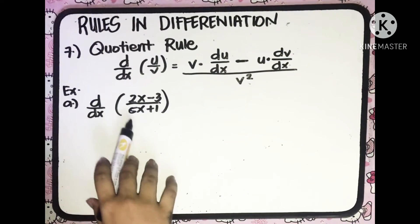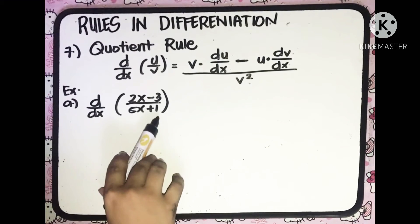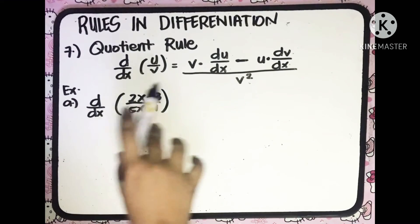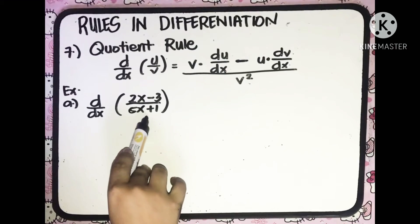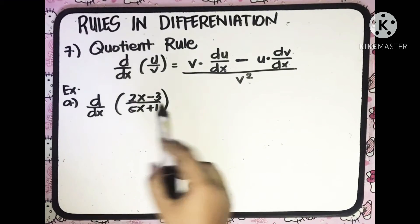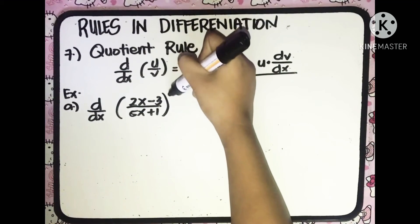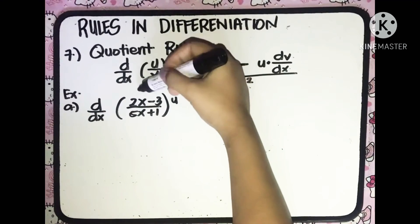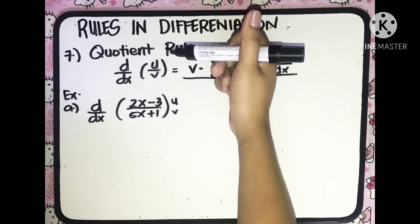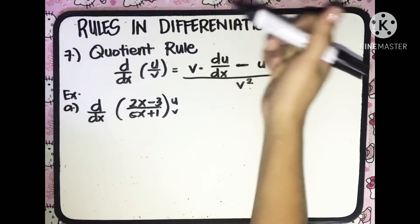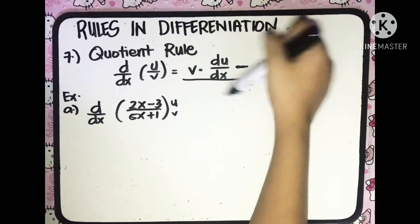Let's label the given example. We have the derivative of (2x minus 3) all over (5x plus 1) with respect to x. So the value of u here is 2x minus 3, and v is 5x plus 1. Now following the quotient rule,